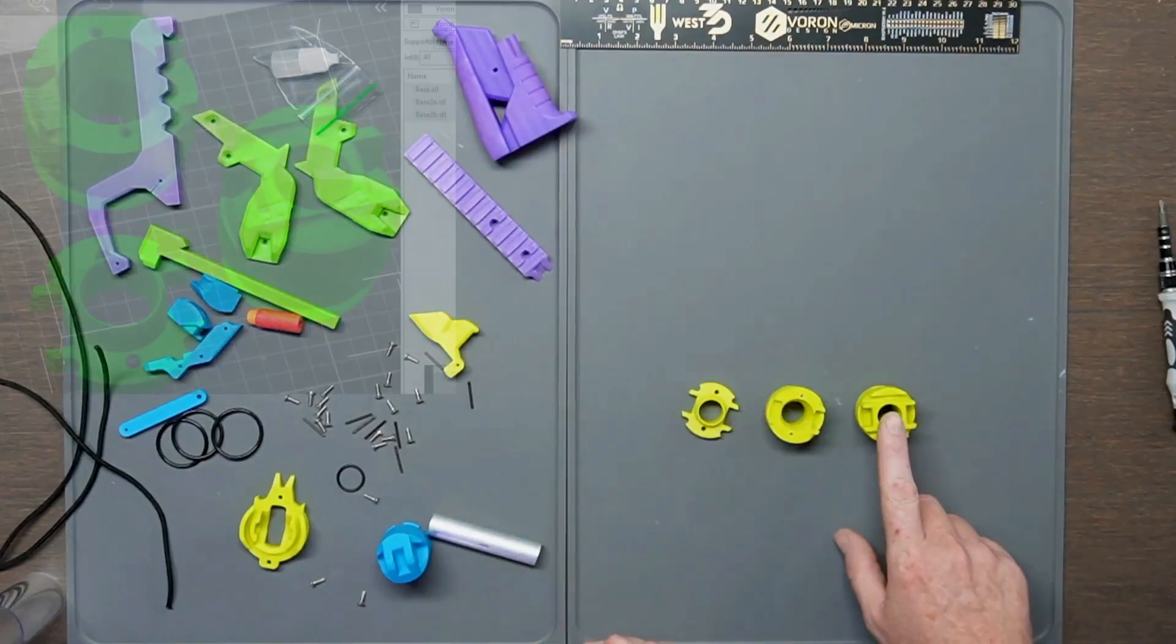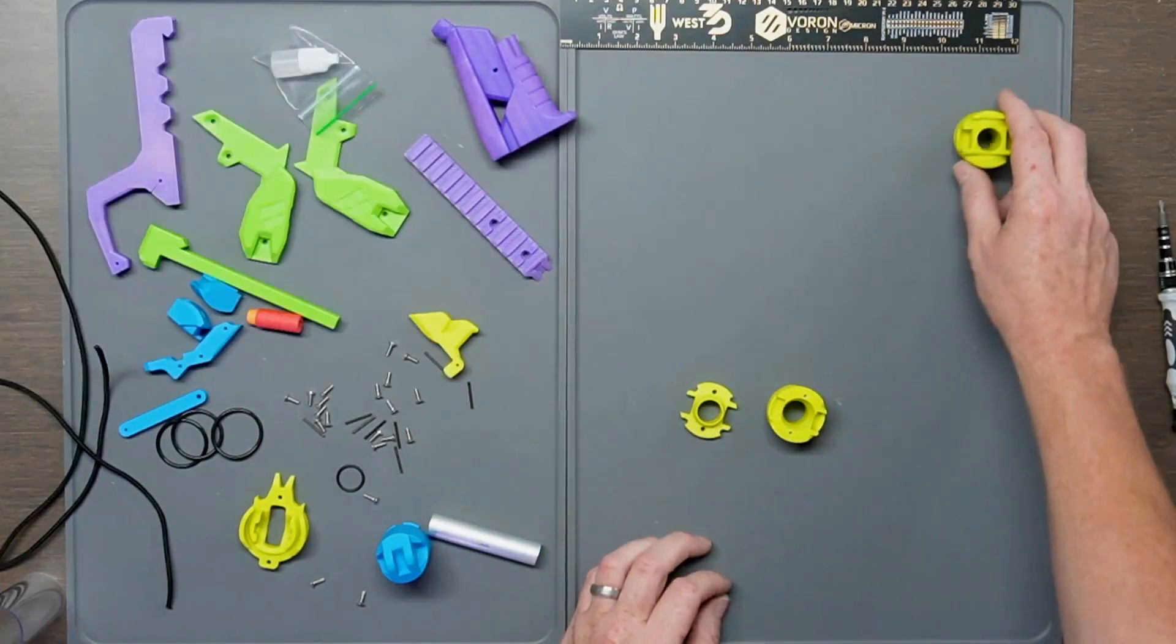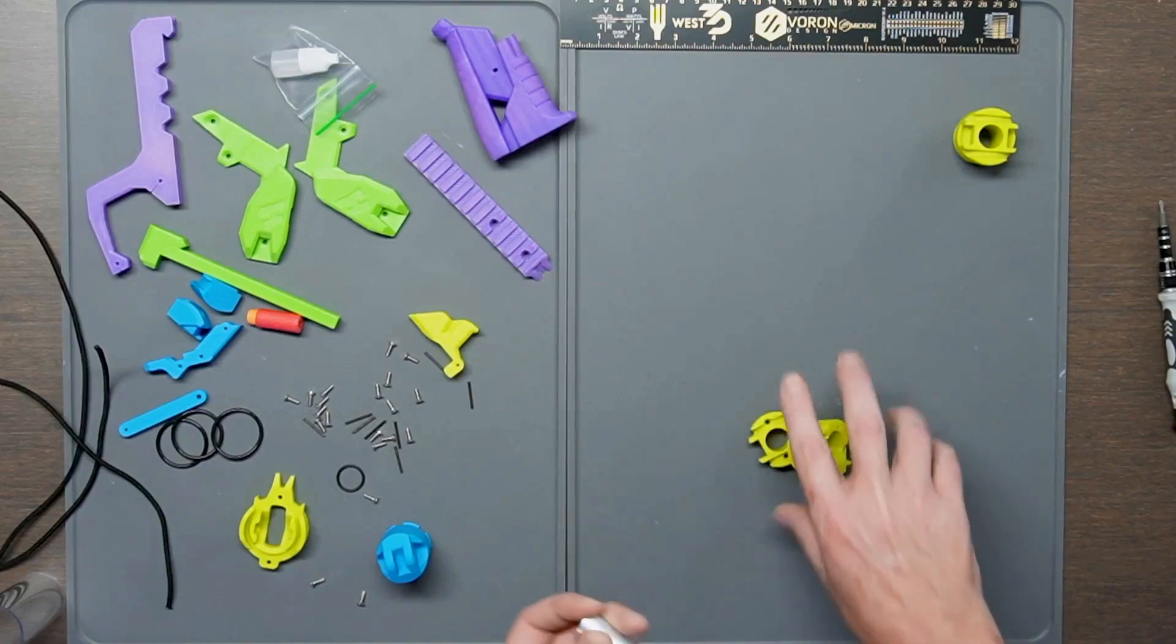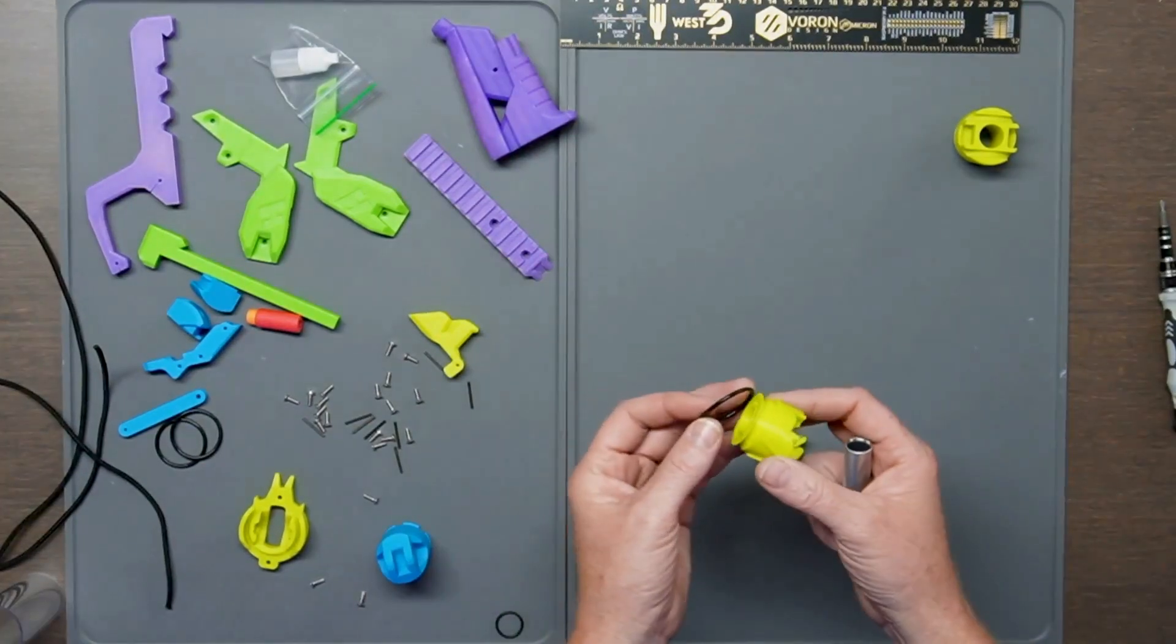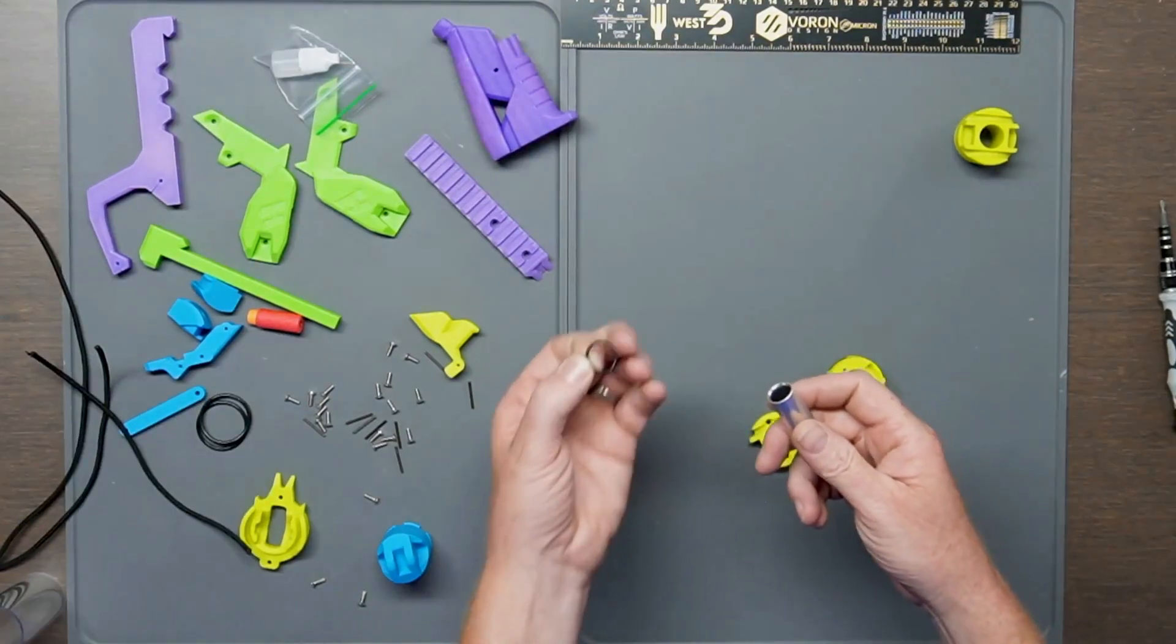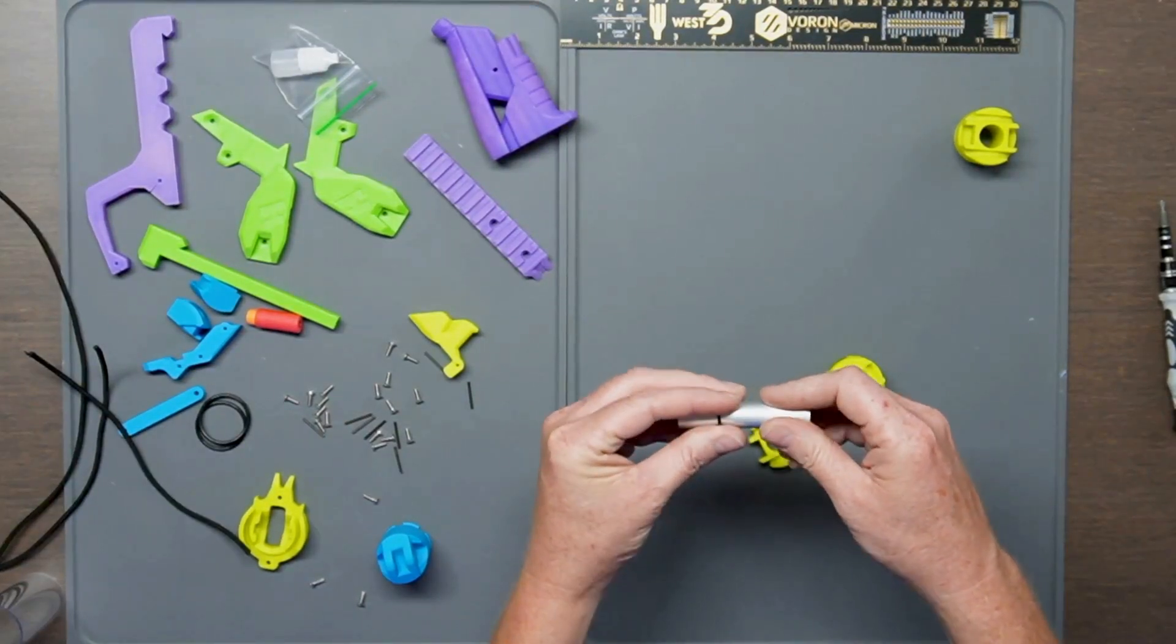So we have here base, base 2A and base 2B. We're only going to be needing the base 2B. We're going to take the big seal and put it around the outside here. You should have three of these. We're going to take the small seal and put it around your little aluminum rod. Like that.